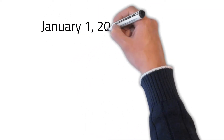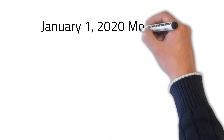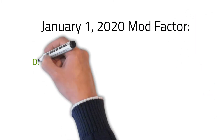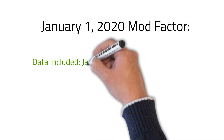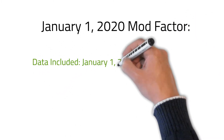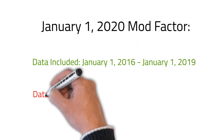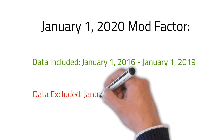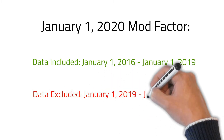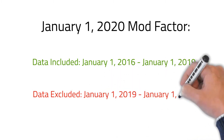For example, for a mod factor calculated on January 1st, 2020, data would be used for the January 1st, 2016 to January 1st, 2019 policy terms. The data for the January 1st, 2019 to 2020 term would be excluded.